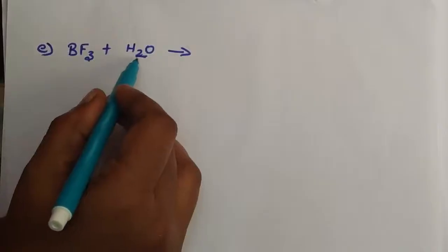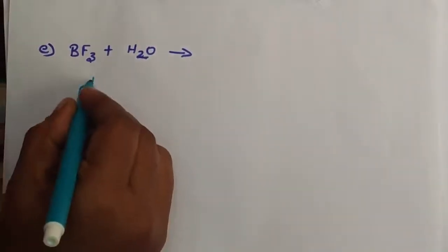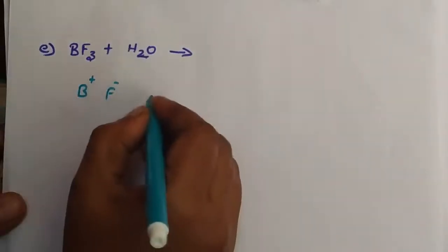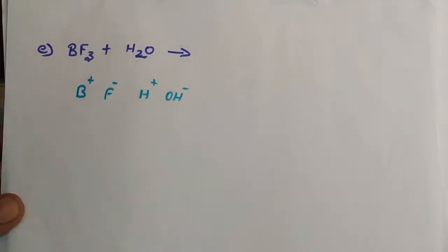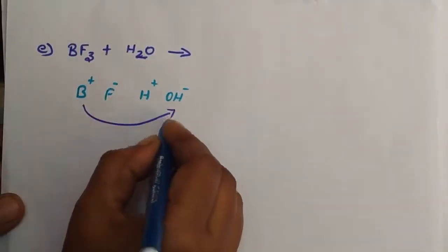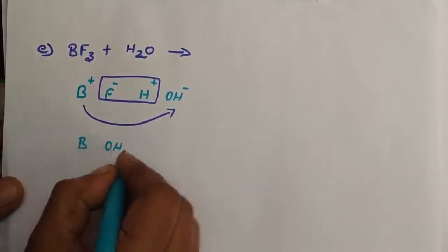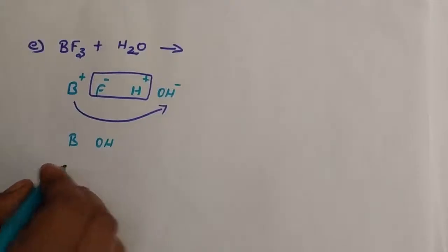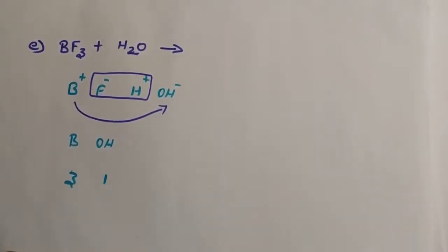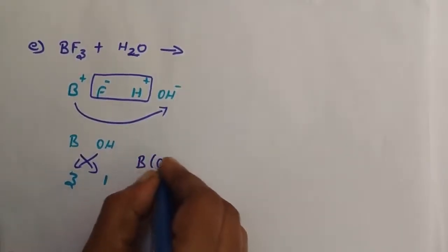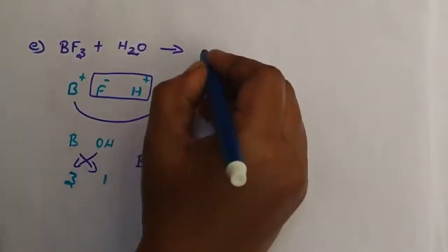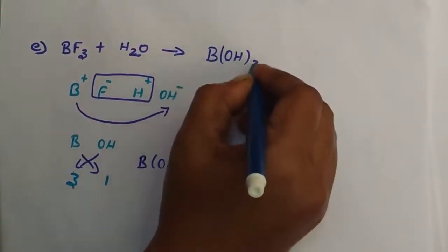Next question: boron trifluoride undergoes hydrolysis — that is addition of water. BF3 splits into B plus and F minus. H2O splits into H plus and OH minus. B plus and OH minus combine. Boron has valence 3 and OH has valence 1, so cross-multiplying gives B(OH)3, which is boric acid H3BO3, as one product.